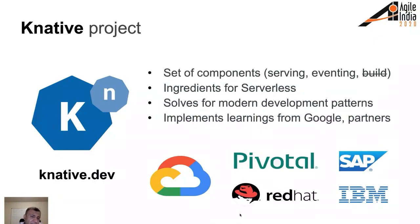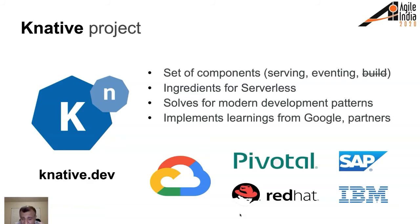Knative is a completely open source system implementing learnings from industry giants. Serving is how you run your container — all aspects of auto-scaling, routing, everything. It's serving requests, hence the name. Eventing is the event framework: in serverless computing, services or containers talk with each other through events, and the framework for channels, brokers, and event handling is done with eventing. Build, prior to version 0.8, handled deploying source code into containers on a cluster, and has now been taken over by Tekton.